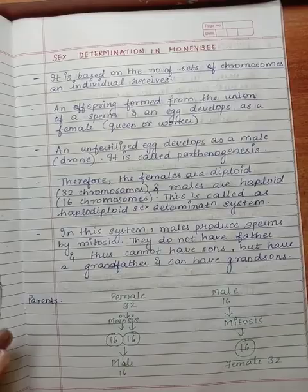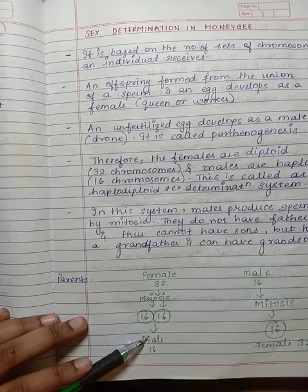In the female there are 32 chromosomes which undergo meiosis producing 16 chromosomes. In the male, the 16 chromosomes undergo mitosis, producing gametes with 16 chromosomes.